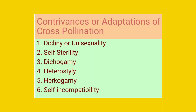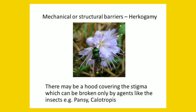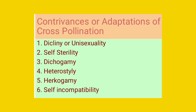The fifth point is herkogamy. Herkogamy means that there are some barriers in the reproductive organ, mainly the gynoecium. The gynoecium forms certain barriers in the style region where the pollen tube cannot reach the ovule because of that physical barrier. In such a case, though the flower is bisexual, it cannot fertilize the ovule of the same flower. Those pollen grains can fertilize the ovule of some other flower where there is no physical or chemical barrier in the style region.